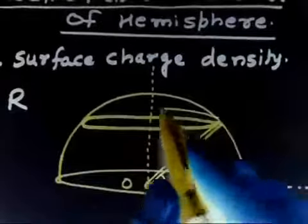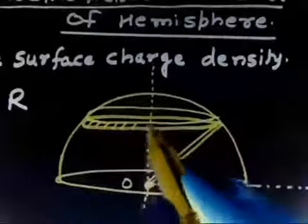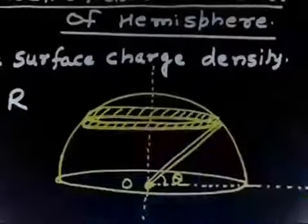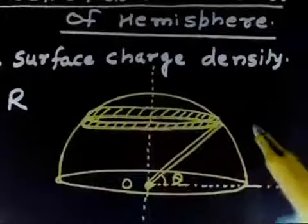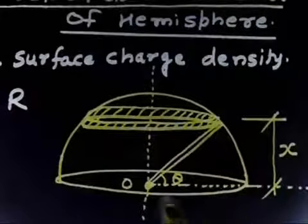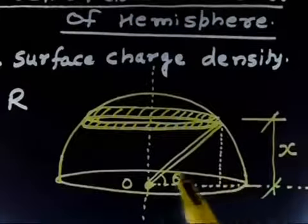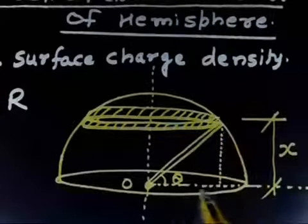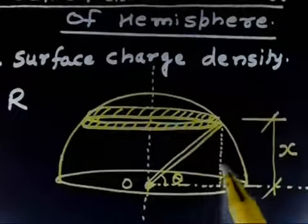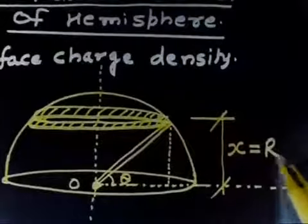If I cut two rings at theta and theta plus d-theta, I get an elemental ring. Now, let us say the perpendicular distance from the ring to the base plane is x. From the triangle, with R as the hypotenuse and angle theta, if I drop a perpendicular, this length will be R sine theta and the horizontal length will be R cosine theta. So x equals R sine theta.